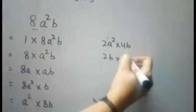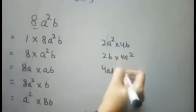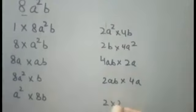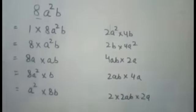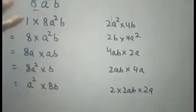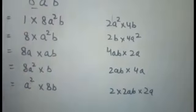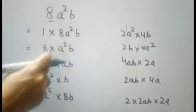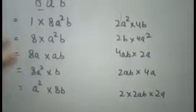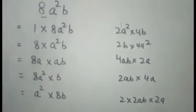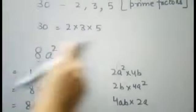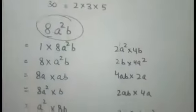We can also write it as 2b into 4a², or 4ab into 2a, or 2ab into 4a, or 2 into 2ab into 2a. So there are many ways to write each algebraic expression as a product of two or more algebraic expressions. All of these — 8a²b, 8a, 2ab, 4a² — are factors of 8a²b, meaning they divide it completely, just as 2 is a factor of 30 because 30 is completely divisible by 2.